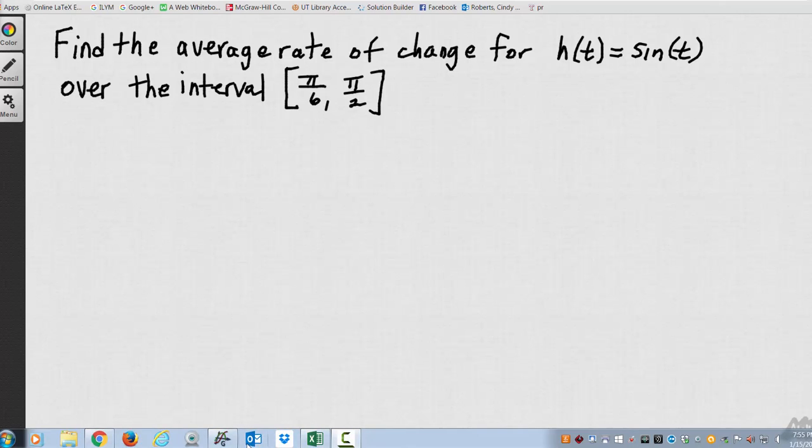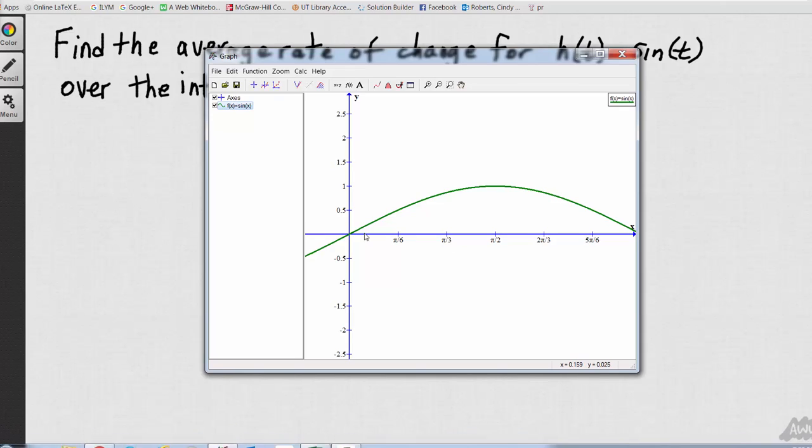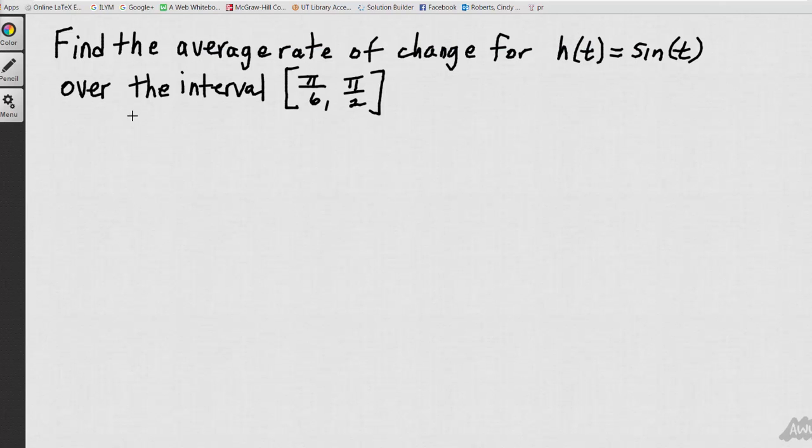Because I've graphed it here, I can see pi over 6 to pi over 2. I'm looking for the slope of the secant line. If I put a point here and a point here and connected the dots, that's what I'm looking for. When I'm looking for an average rate of change over an interval,